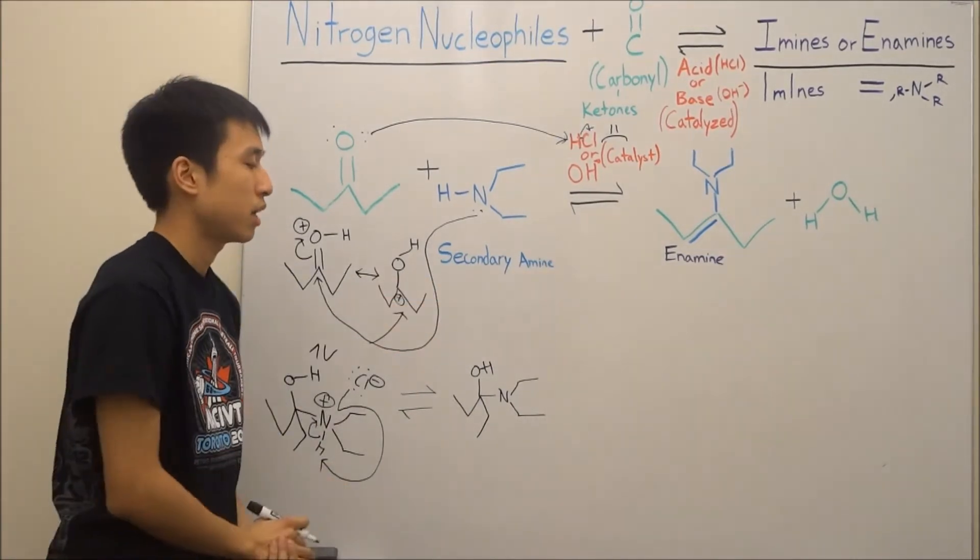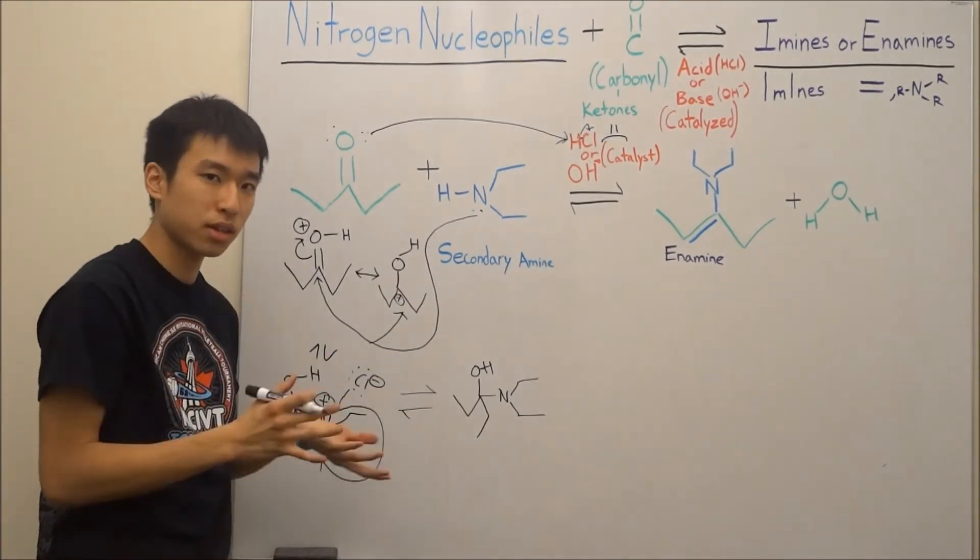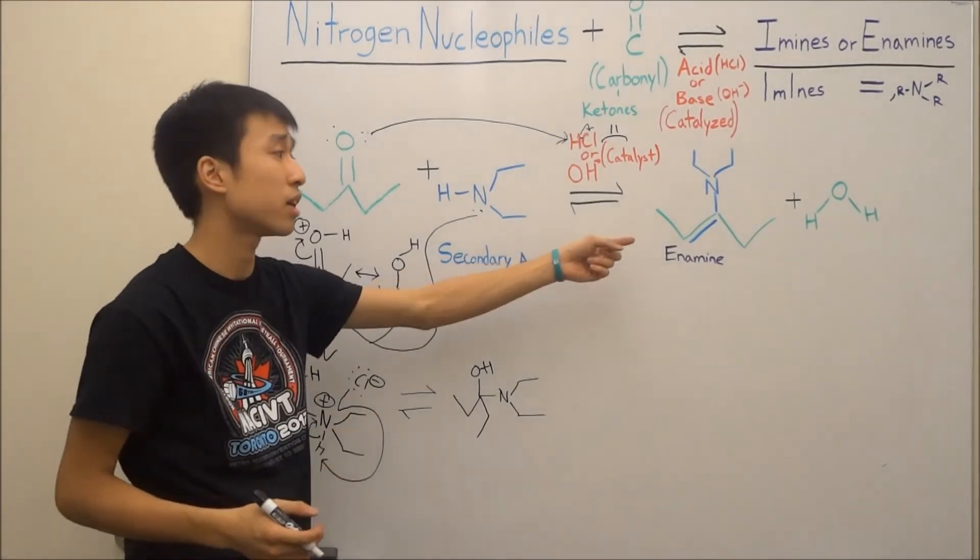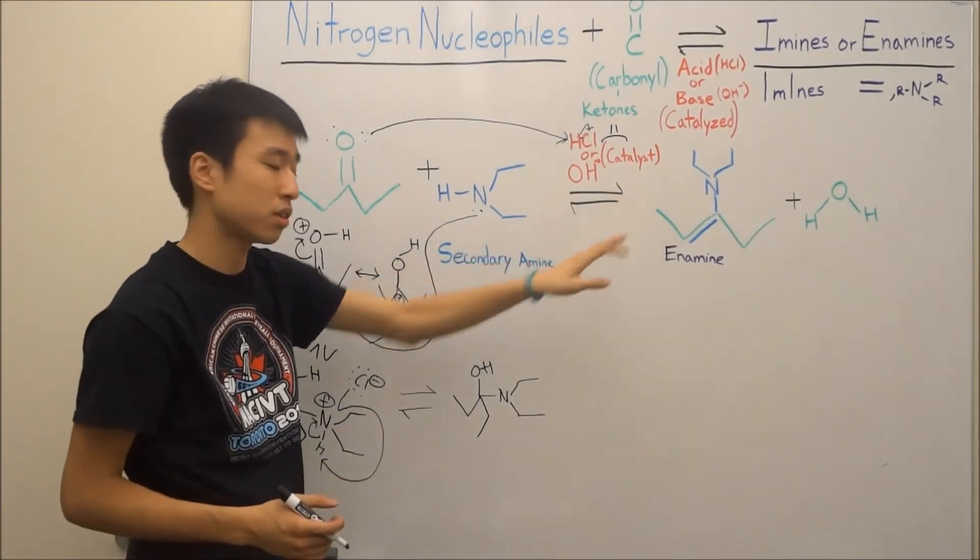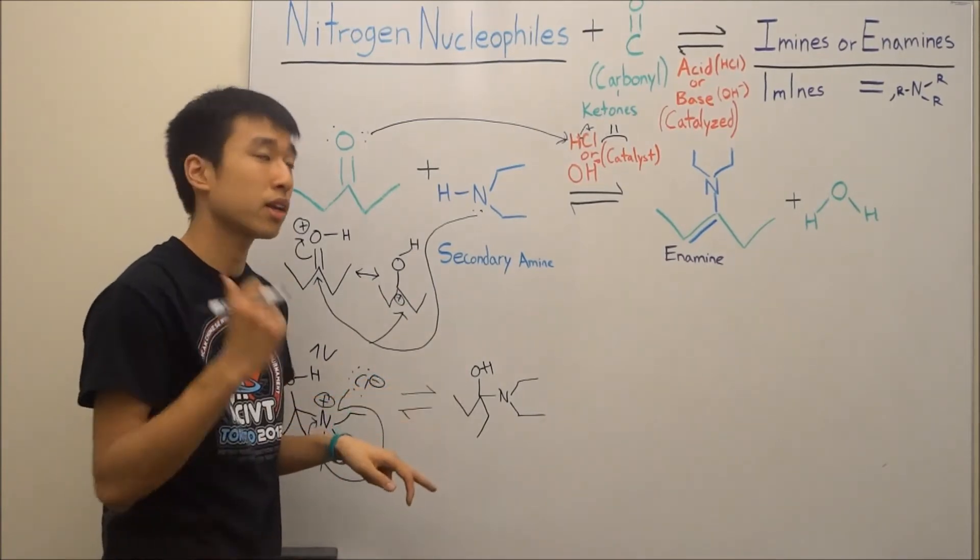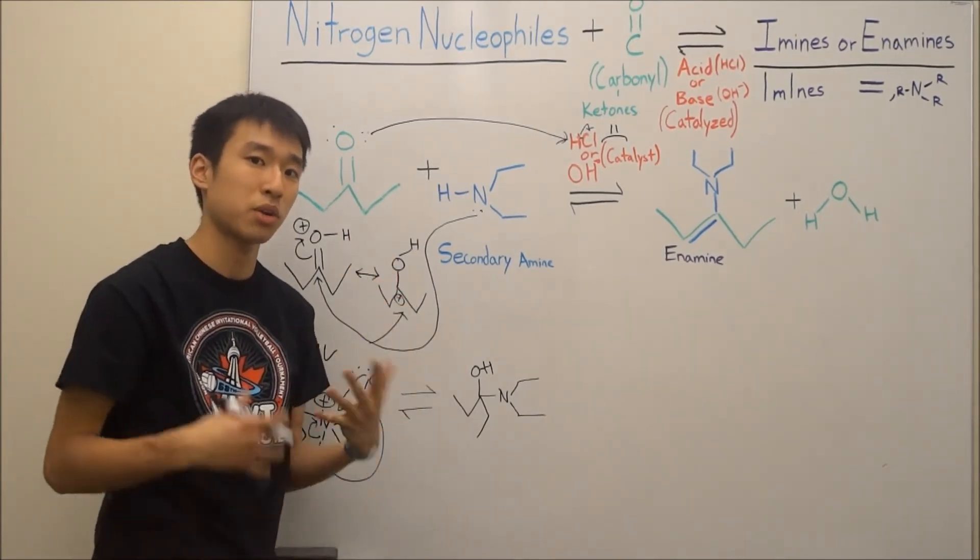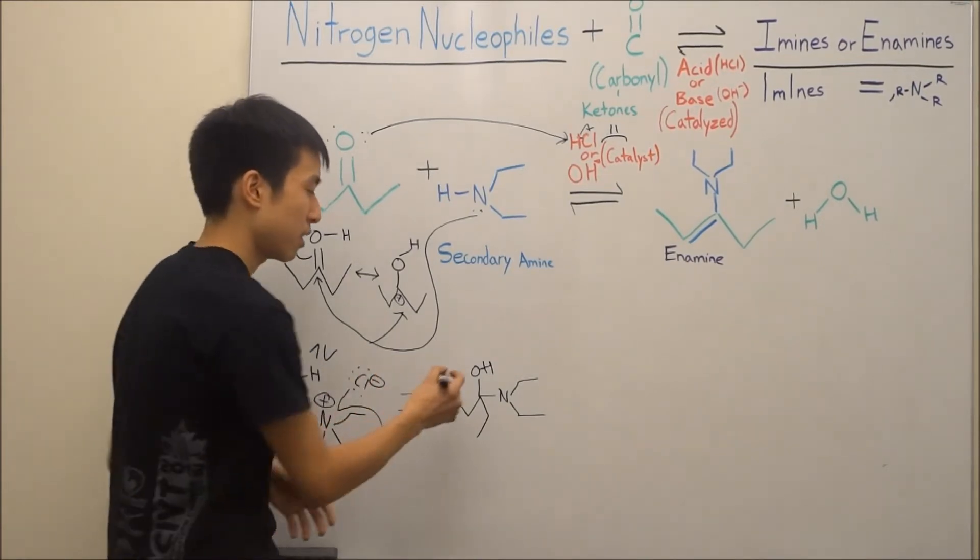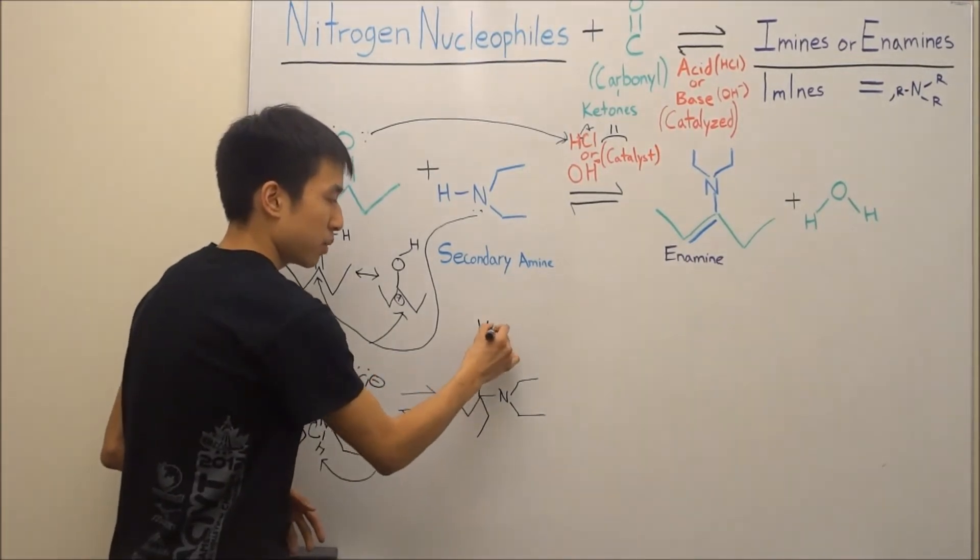We have to get to our enamine, and the key thing is, once you get stuck, your catalyst helps you out. So our goal is to get to an enamine, where there's no oxygen on your molecule. So we have to kick this alcohol out, like in the imine mechanism. So how do we kick it out? We turn it into a better leaving group, by putting a charge on it. And how do we do that? We use your catalyst.